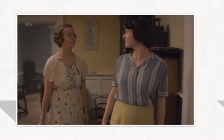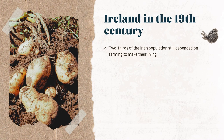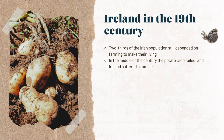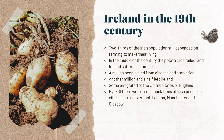Ireland in the 19th century. Conditions in Ireland were not as good as in the rest of the UK. Two-thirds of the population still depended on farming, often on very small plots of land. Many depended on potatoes as a large part of their diet. In the middle of the century the potato crop failed and Ireland suffered a famine. A million people died from disease and starvation. Another million and a half left Ireland — some emigrated to the United States and others came to England. By 1861 there were large populations of Irish people in cities such as Liverpool, London, Manchester, and Glasgow. The Irish nationalist movement had grown strongly through the 19th century. Some, such as the Fenians, favoured complete independence. Others, such as Charles Stuart Parnell, advocated home rule, in which Ireland would remain in the UK but have its own parliament.